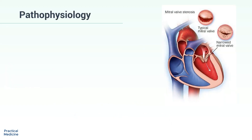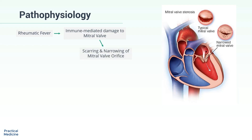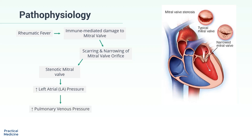Pathophysiology: Rheumatic fever leads to immune-mediated damage to the mitral valve. This occurs as a result of cross-reactivity between the streptococcal antigen and the valve tissue. The resulting inflammation leads to scarring and narrowing of the mitral valve orifice. The stenotic mitral valve results in elevated left atrial pressure and, as a consequence, elevated pulmonary venous pressure leading to pulmonary congestion.